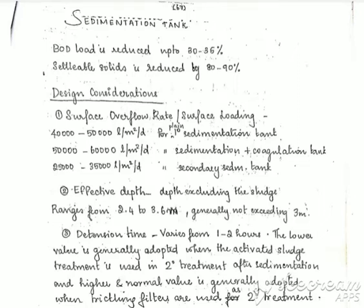The four main parts are: the inlet, the settling, the effluent, and the sludge collection area. Then, the BOD load — the sedimentation tank will be used to reduce the BOD load by 32 to 35%.